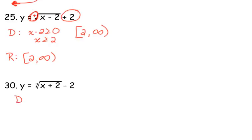30's a cube root, it's all real numbers. Both are all real numbers. That's easy. If you see a cube root, just write all real numbers for your interval notation and you're good.